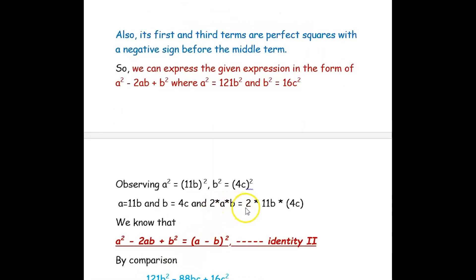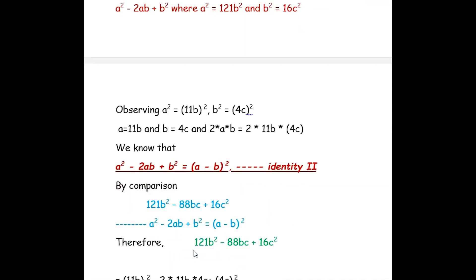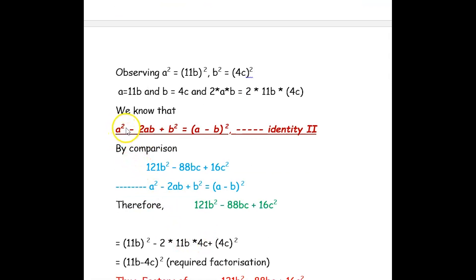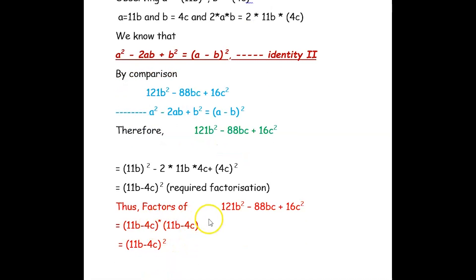Now, 2 into a into b is 2 into 11b into 4c. Checking: 22 into 4 is 88, and b into c is bc — so we get 88bc, which is exactly what is in our given equation. Using the identity a squared minus 2ab plus b squared equals (a − b) whole squared, we can express the given equation as (11b − 4c) whole squared. Thus, the factors of 121b squared minus 88bc plus 16c squared is (11b − 4c) whole squared.